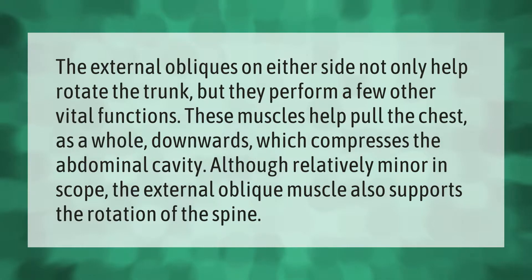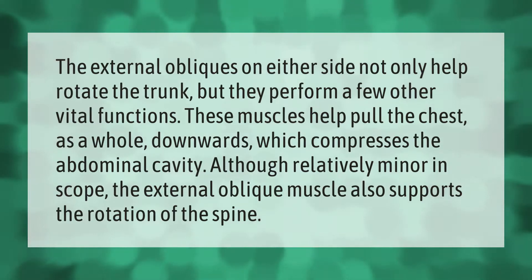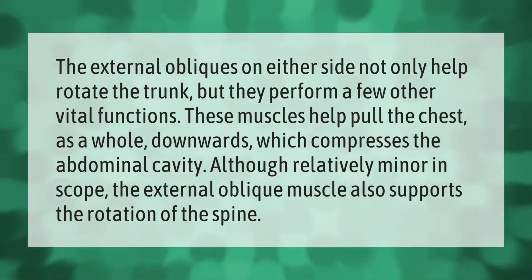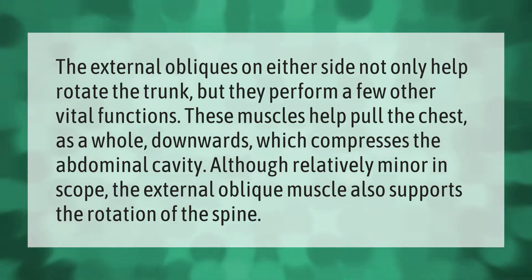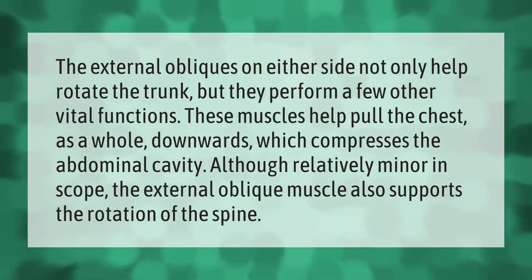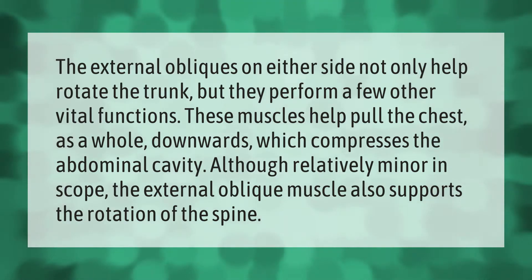The external obliques on either side not only help rotate the trunk but perform a few other vital functions. These muscles help pull the chest downwards as a whole, which compresses the abdominal cavity. The external oblique muscle also supports the rotation of the spine.